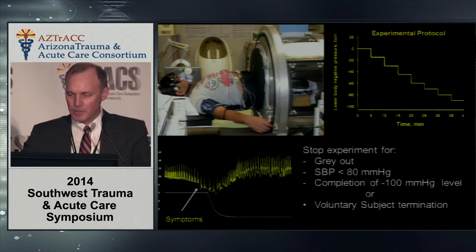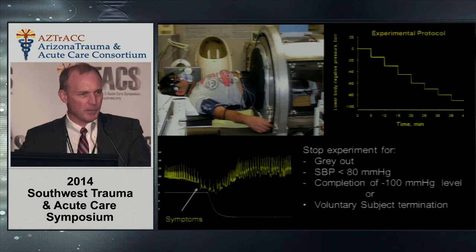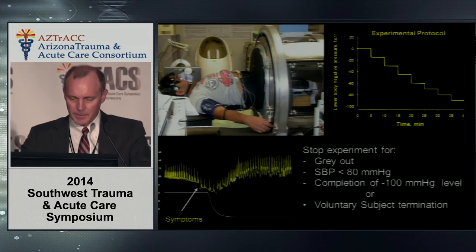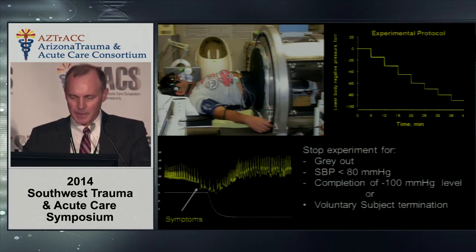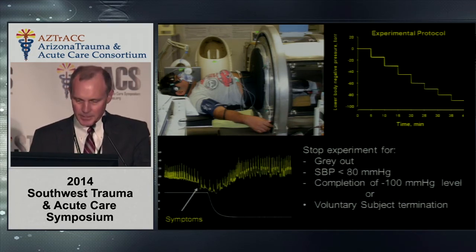The experimental protocol is stepwise. You can see the non-invasive blood pressure waveform of a subject who's reached the point of decompensation — they've become bradycardic and hypotensive. The experiment is stopped if the patient grays out, develops hypotension, completes the minus 100 mmHg level, or requests early termination due to dizziness or nausea.